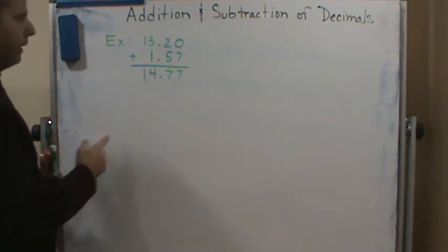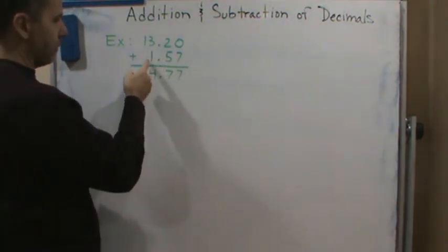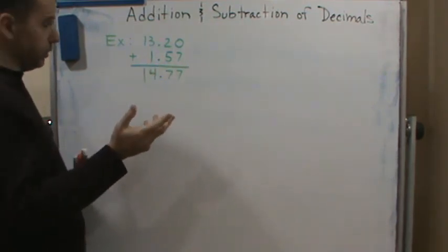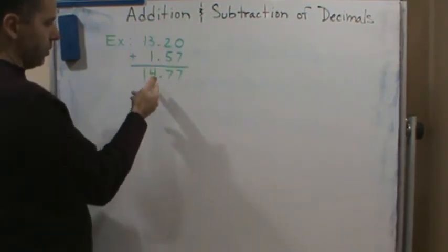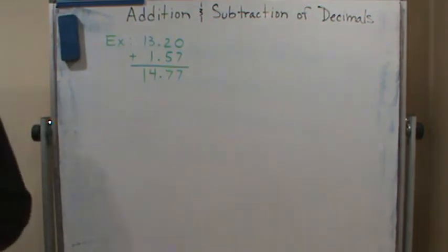Right? And if you round, if this rounds to 13 and this rounds to 2, because again, use your rounding rules. So 13 plus 2 is 15, which is pretty darn close to 14.77.